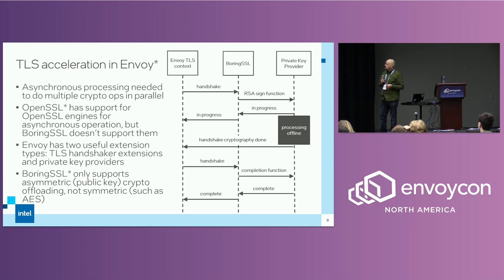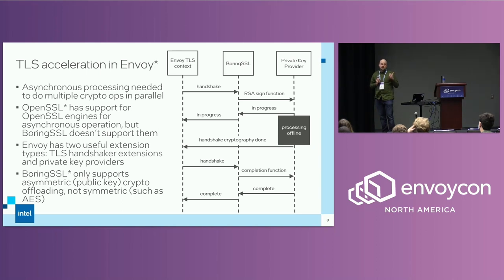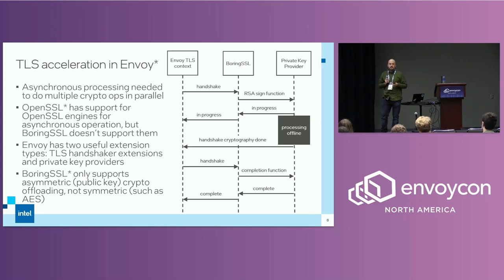OpenSSL engines can do a bit more: key exchange operations and symmetric encryption like AES. But for both CryptoMP and QAT, what is done is mostly RSA signing and decryption operations.